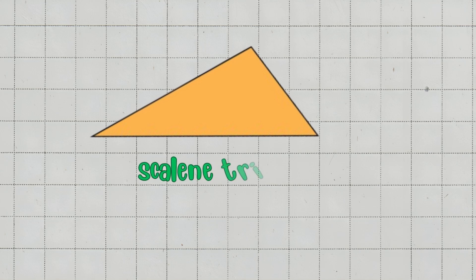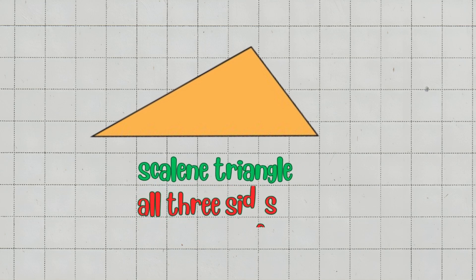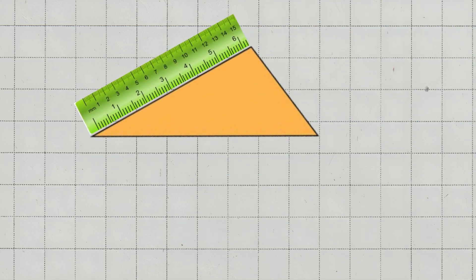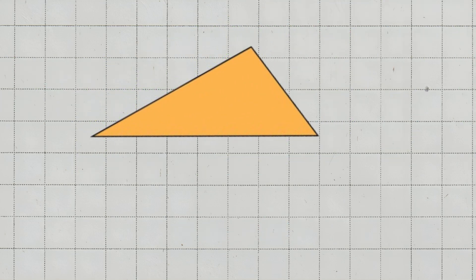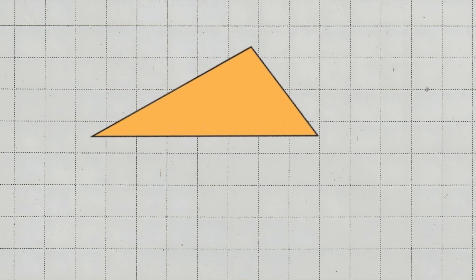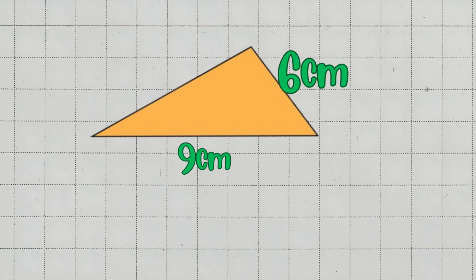A scalene triangle is a type of triangle where all three sides have different lengths. None of the sides are equal, so it's our job to figure out the perimeter. Let's take an example of a scalene triangle with the following side lengths: the first side measures 9 cm, the second side measures 6 cm, and the third side measures 7 cm.